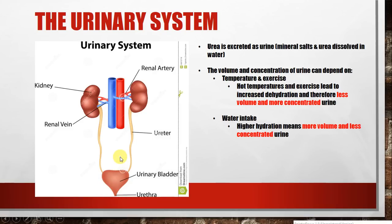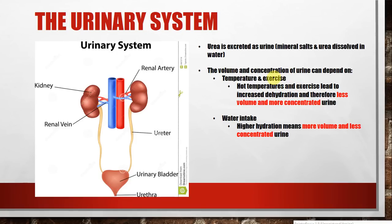One thing about urine is the volume and concentration of it can depend on several factors — for example, temperature and exercise. When the temperature is really hot and when you exercise a lot, your urine becomes more concentrated, so more yellow, and you urinate less. The reason is that in hot temperatures and when you exercise a lot, you get more dehydrated because you sweat a lot. A lot of water is lost through your skin, so not much water is left inside your body, meaning when you urinate there's not much water in it — the volume is less and it's more concentrated.